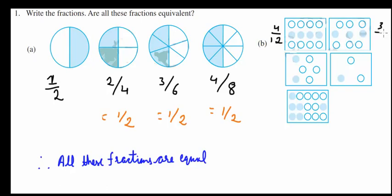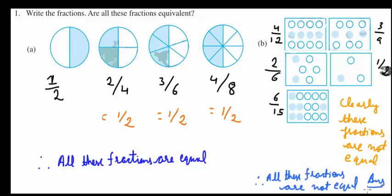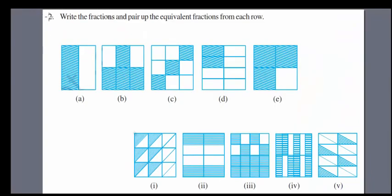For part b, we have 4 over 12, 3 over 9, 2 over 6, 1 over 3, and 6 over 15. These fractions are not equal, as you can see they don't make equal proportions. Therefore all these fractions are not equal.